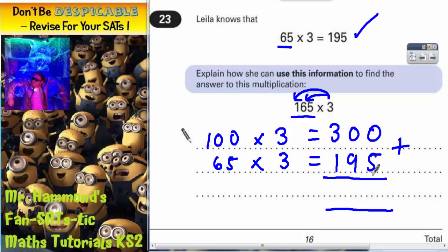So the final answer is: nothing plus 5 is 5, nothing plus 9 is 9, 3 plus 1 is 4. So the answer is 495.